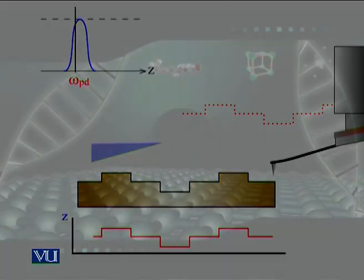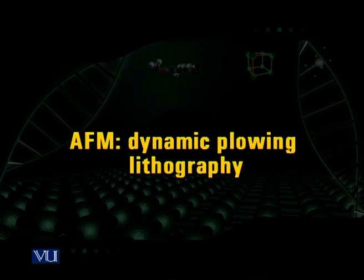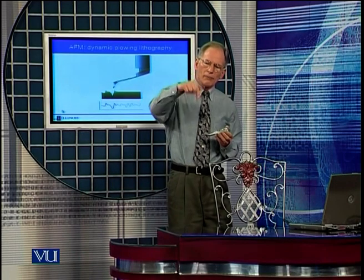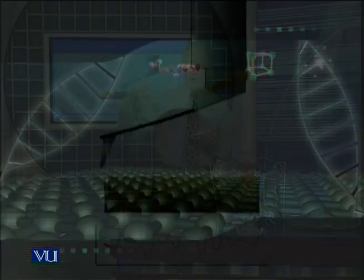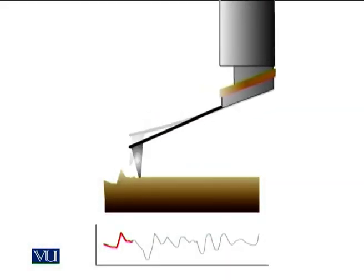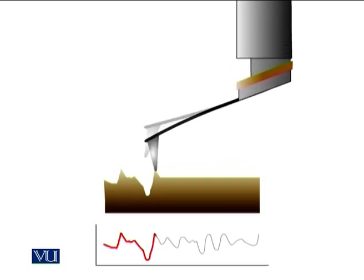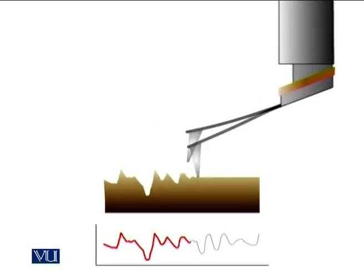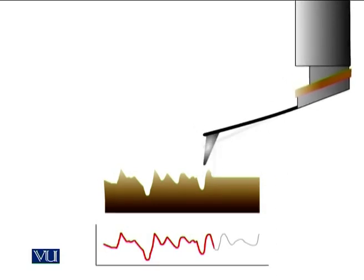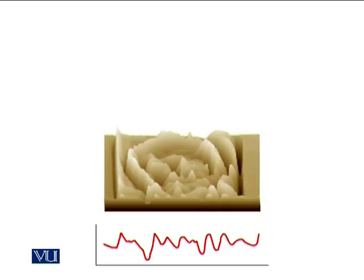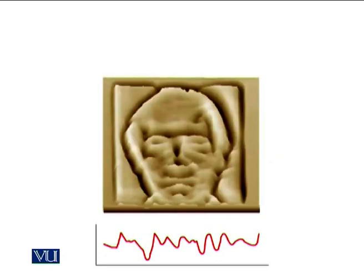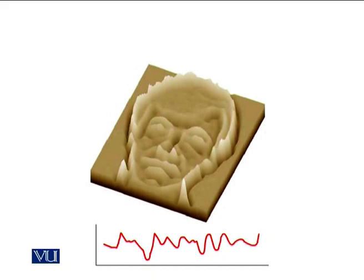You can also use a tip to modify the surface — called dynamic plowing lithography. You pound into it with the tip, removing material where you want, then going to the next line and removing more material to make a three-dimensional object. You can make anything you want — demonstrated here as a person's face made with dynamic plowing lithography.